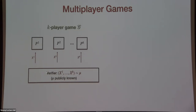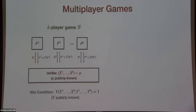The distribution mu is publicly known to everyone — all the players and the verifier. The verifier sends the relevant questions to the K players: X1 to the first player, X2 to the second, and so on up to XK. The players give back answers: Y1 = F1(X1), Y2 = F2(X2), and so on. The verifier then evaluates a win condition, a predicate V, which is a function of all questions X1 through XK and answers Y1 through YK. V is also publicly known prior to the game.